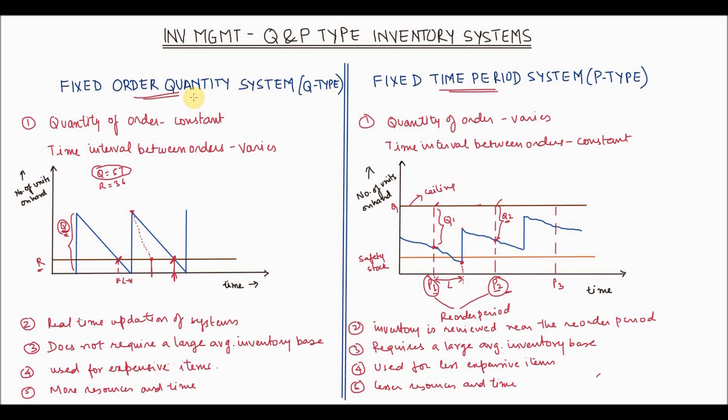The first type is known as fixed order quantity system. We also call it Q type because Q, that means quantity, is the basis of this type of system. The second is known as fixed time period system. This is also known as P type because time period is the primary factor for this system.